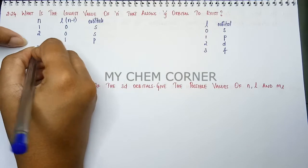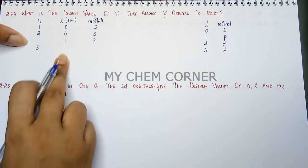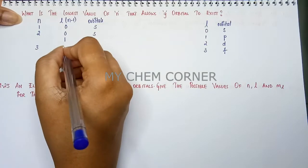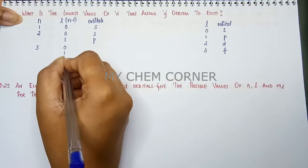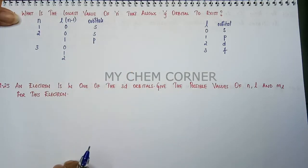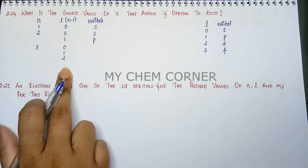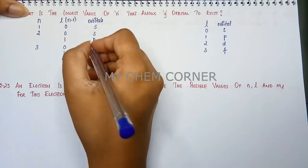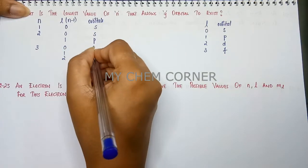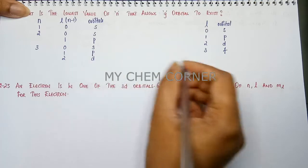Then you have n equals 3. In this you need to get your values. So you will have 0, 1, 2. So you have 0, 1, 2 here. Now when l equals 0 it is s. l equals 1 it is p and l equals 2 you have d orbital.